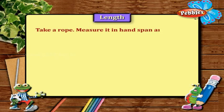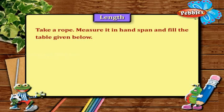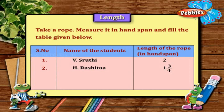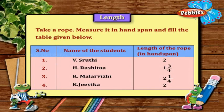Take a rope, measure it in hand spans and fill the table given below. Shruti measured the length of the rope as 2 hand spans. Rashita measured the length of the rope as 1 and 3 fourth hand spans. Malarviri measured the length of the rope as 2 and 1 fourth hand spans. And Jivita measured the length of the rope as 2 hand spans.